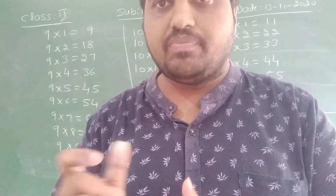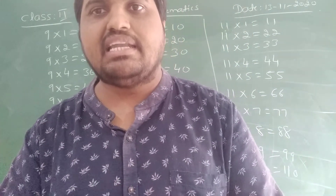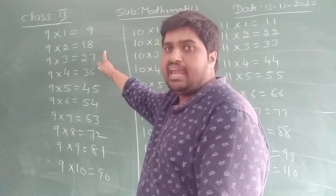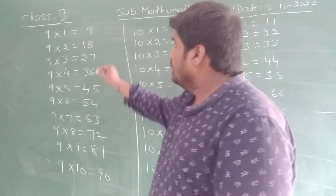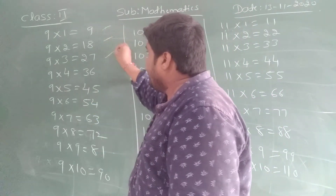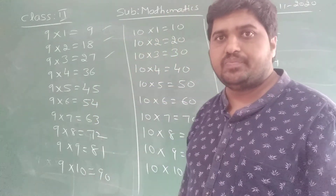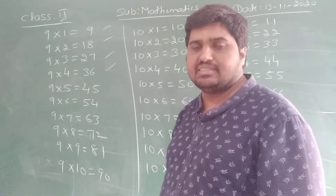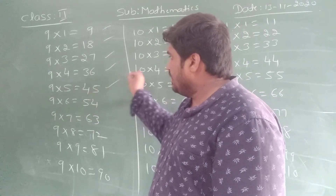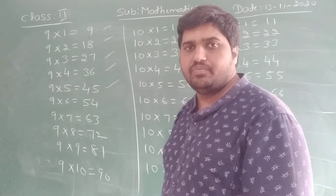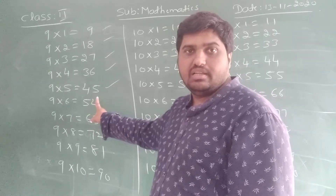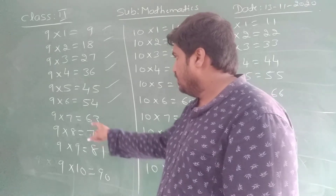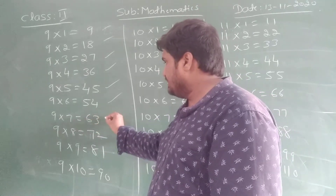Now you have to tell with me. 9, 1 is 9. 9, 2 is 18. 9, 3 is 27. 9, 4 is 36. 9, 5 is 45. 9, 6 is 54. 9, 7 is 63.